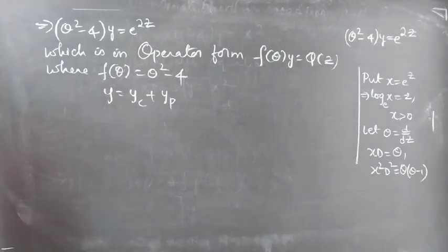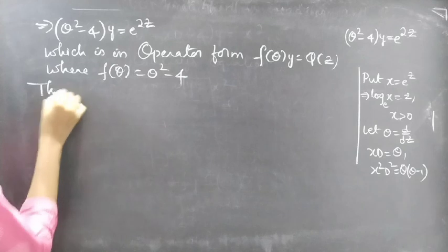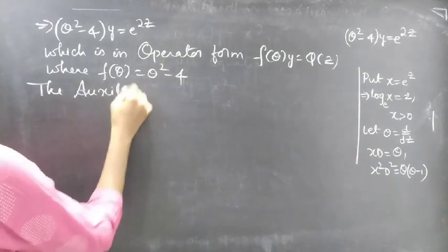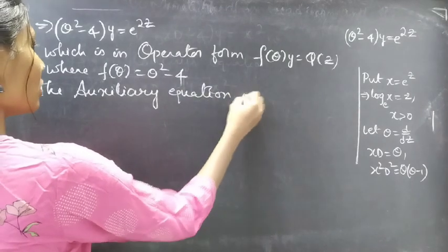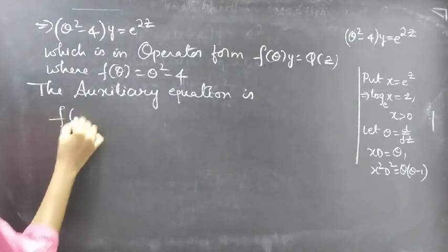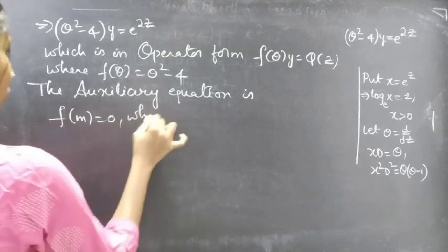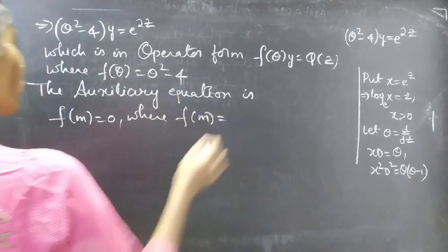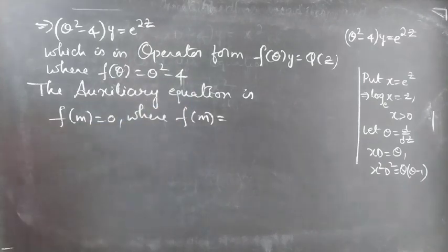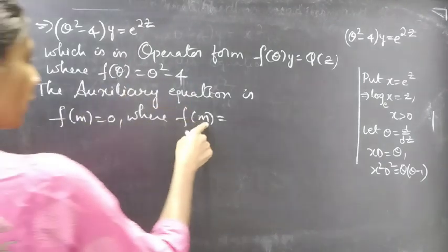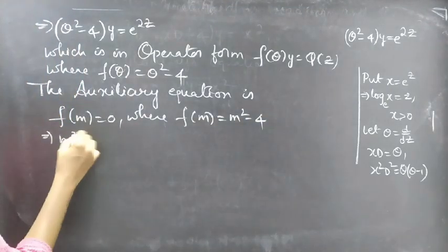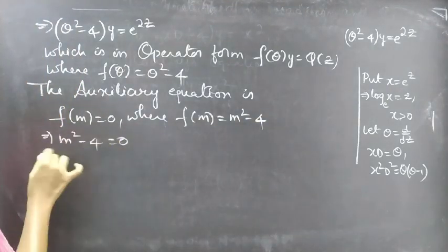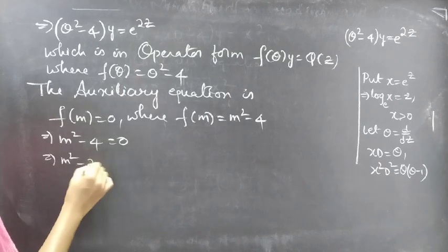We'll find yc using the auxiliary equation. The auxiliary equation is f of m equals 0, where f of theta is theta squared minus 4. Replacing theta by m, we get f of m equals m squared minus 4. So the auxiliary equation becomes m squared minus 4 equals 0.